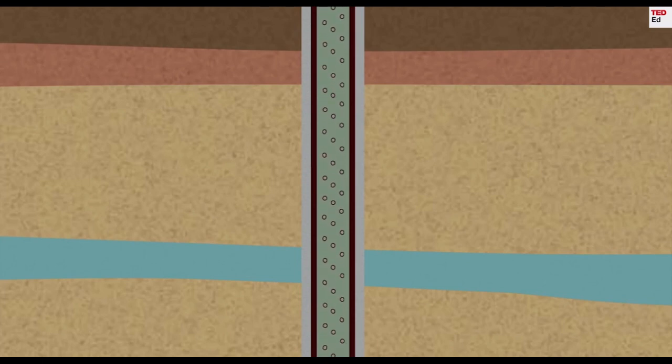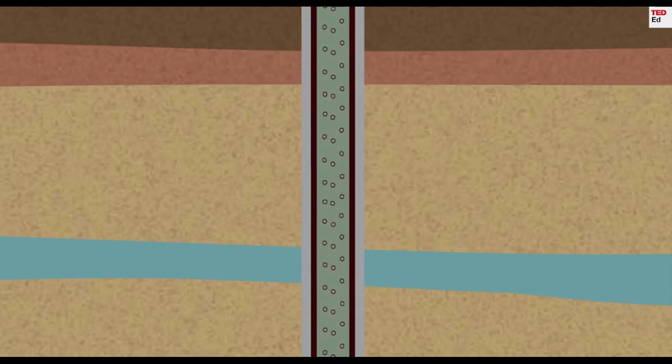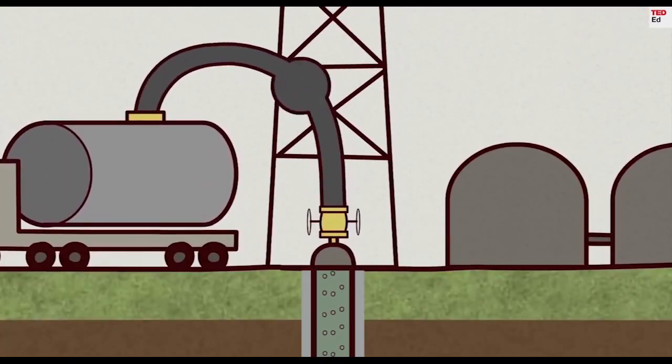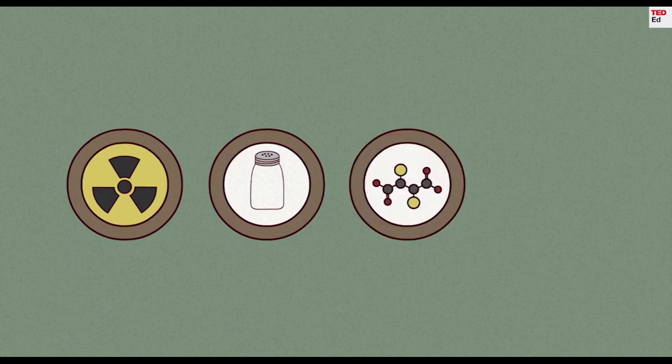Along with the trapped gas that's pumped up to the surface, millions of gallons of flow-back liquid come gushing up. This liquid, containing contaminants like radioactive material, salts, heavy metals, and hydrocarbons, needs to be stored and disposed of.